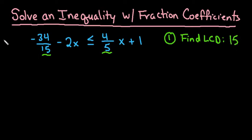Once you find the lowest common denominator, you are going to multiply all values by the lowest common denominator.